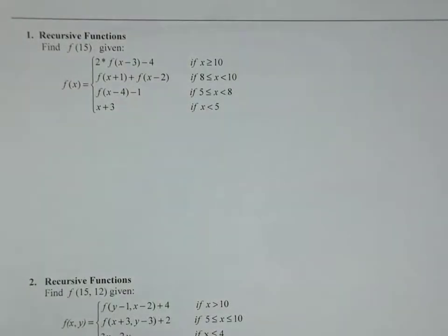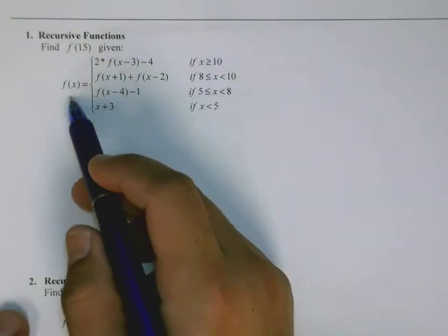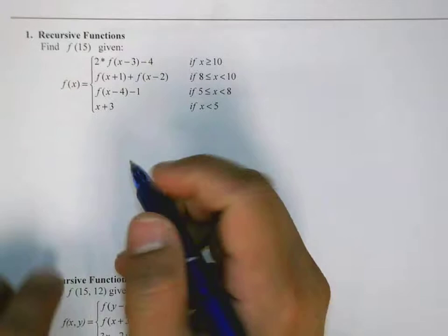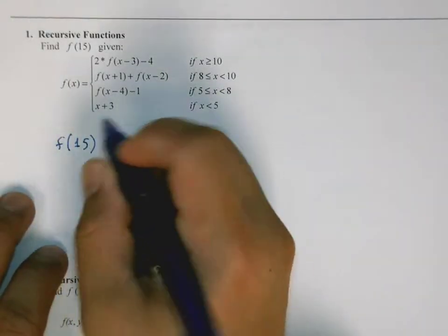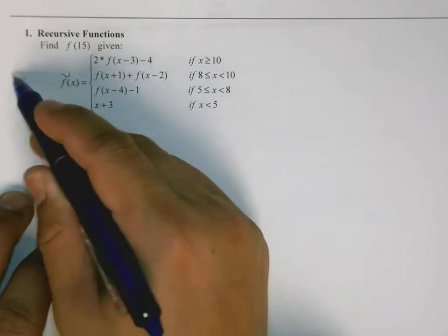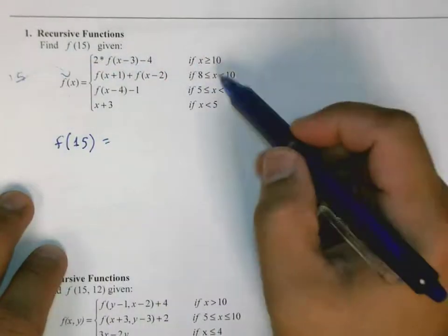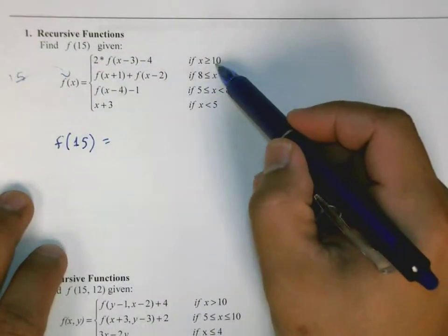Okay, so given this function, find f of 15. So I start out by saying f of 15, so we pass 15 into this function, and that hits this if statement.